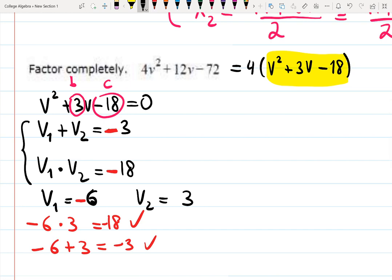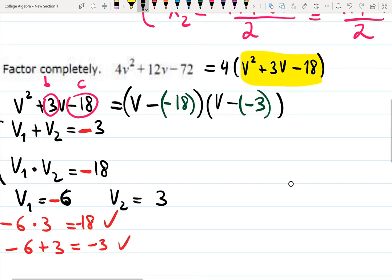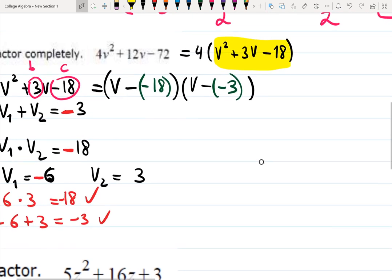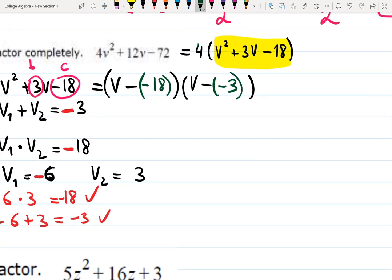And this is how I play this game, and usually it works really well. That means I can factor out, and it's going to be v minus negative 6 times v minus negative 3. And then I can simplify that. But that's not the answer we need.